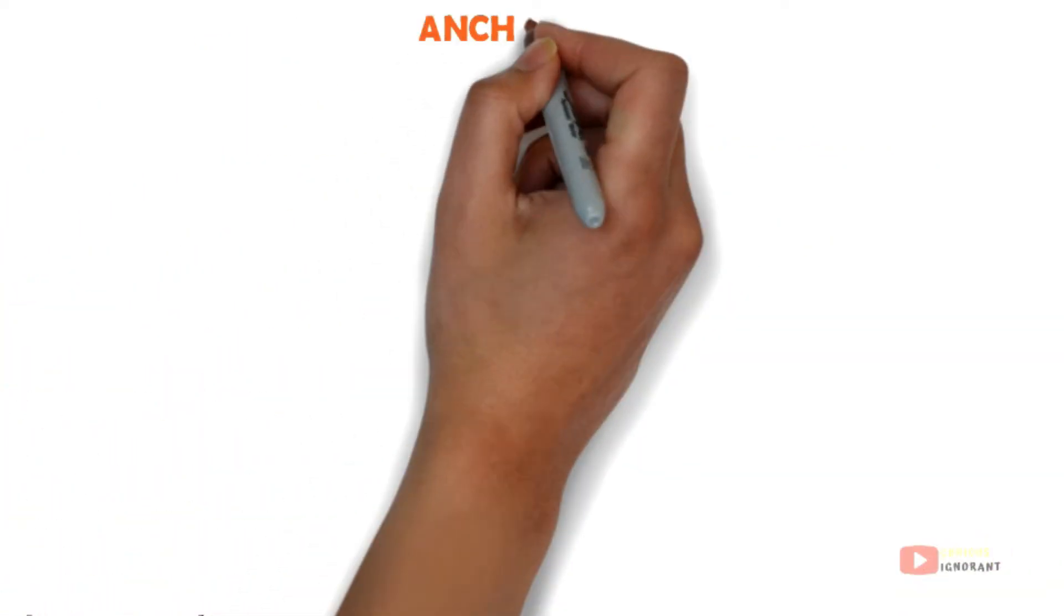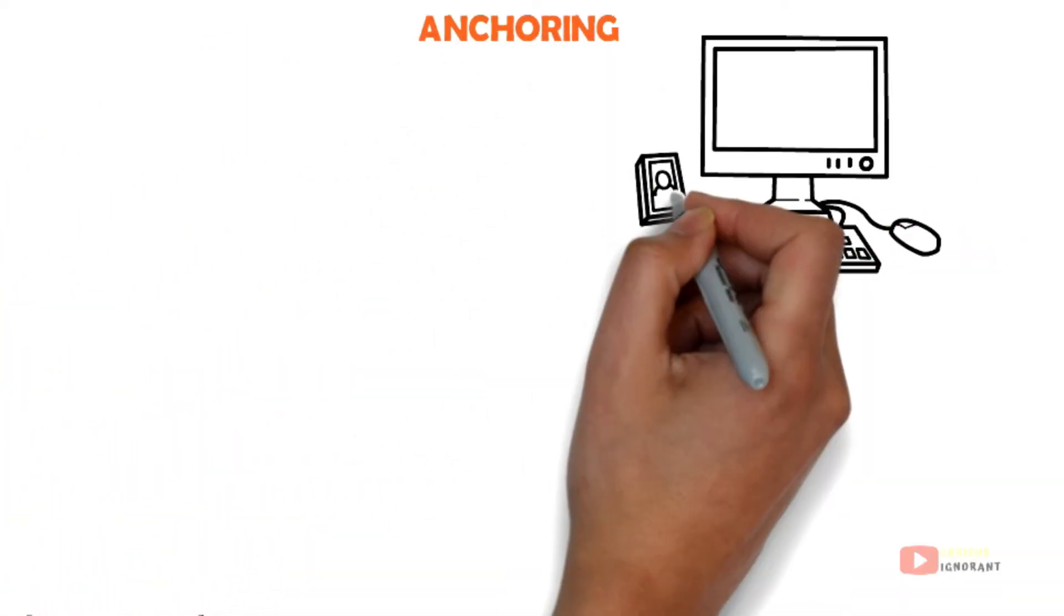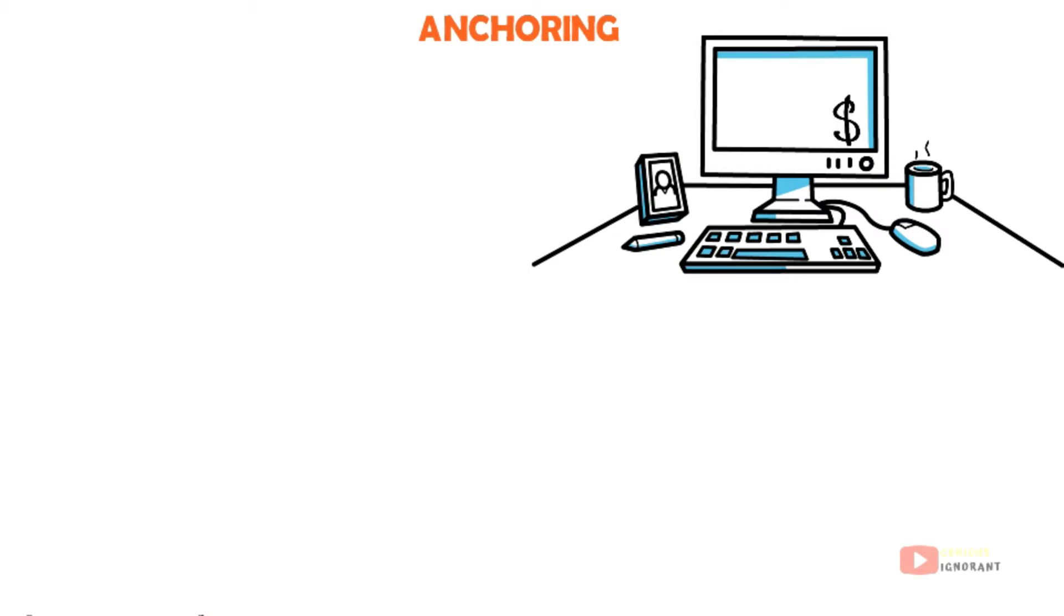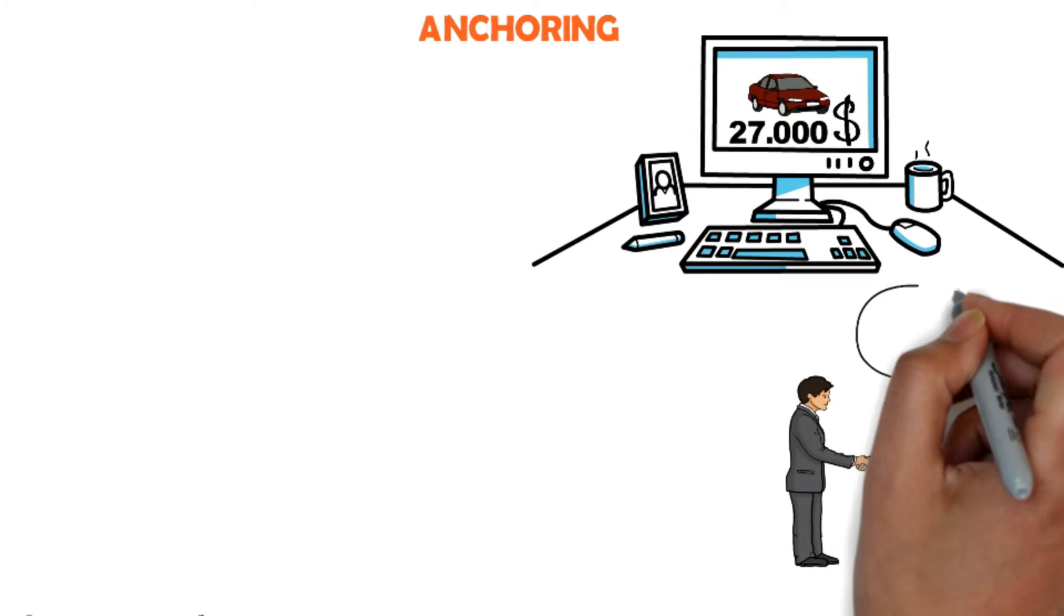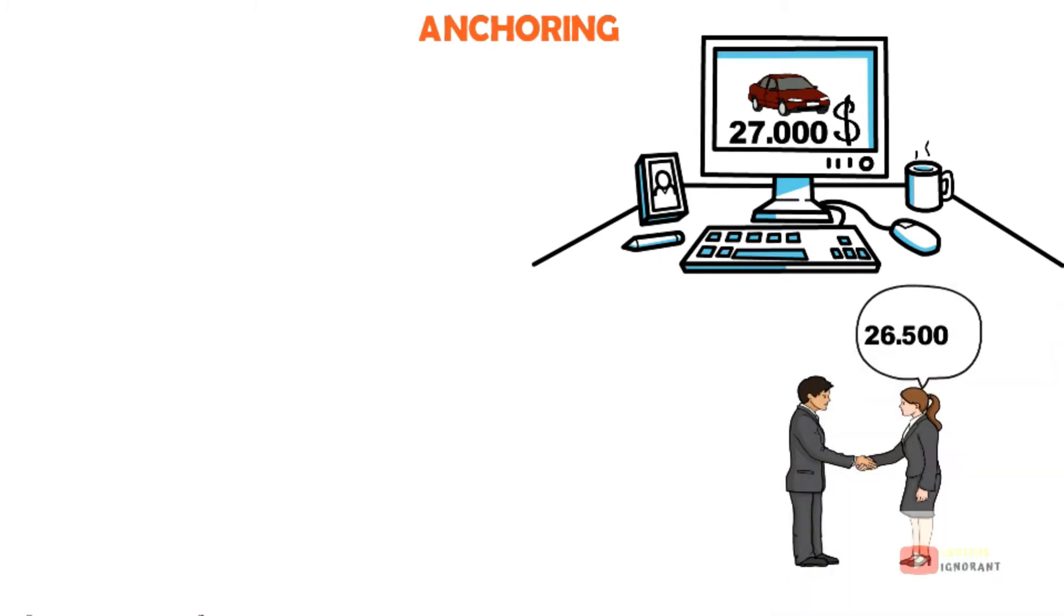Anchoring. For example, imagine that you are buying a new car. You read online that the average price of the vehicle you are interested in is $27,000. When you are shopping at the local car lot, the dealer offers you the same vehicle for $26,500, which you quickly accept.